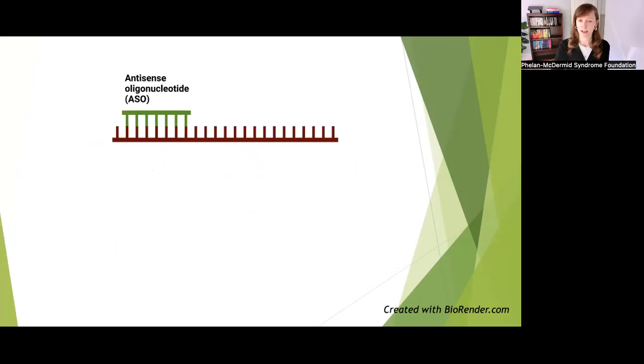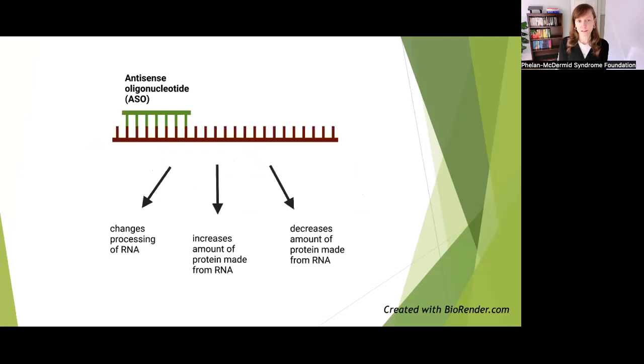ASOs can modify the RNA in a number of ways. They can alter the processing of the RNA, or they can alter how much protein is made from the RNA, either increasing it or decreasing it. So these ASOs can be developed to be rather specific to a disorder by targeting an RNA of interest in that disorder. In this case, we're looking at SHANK3.